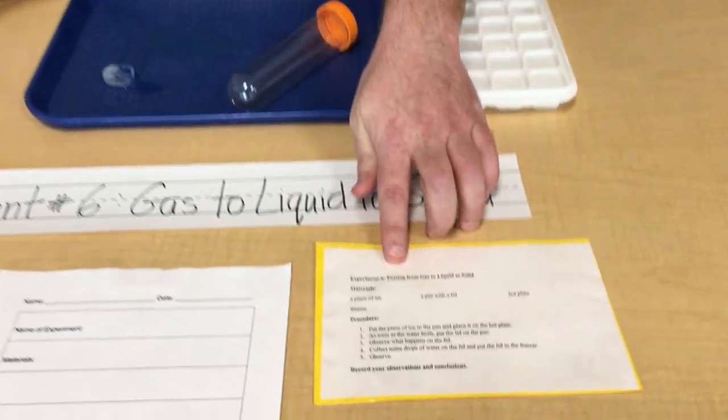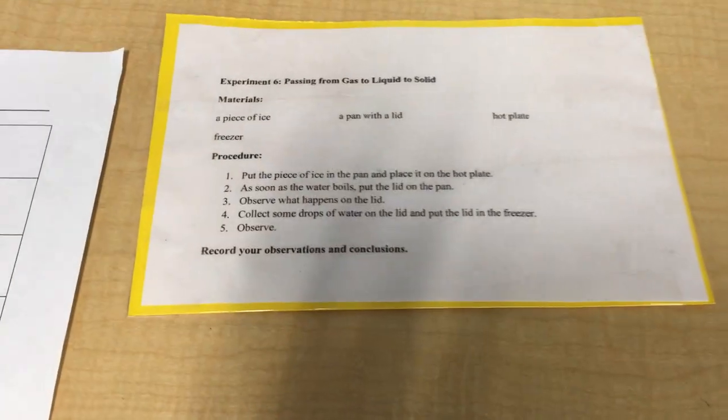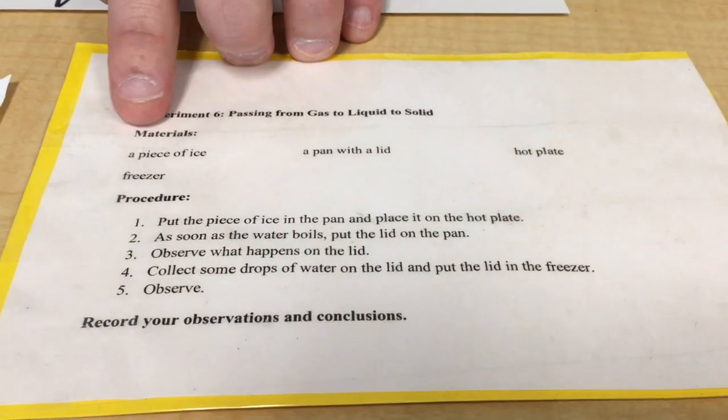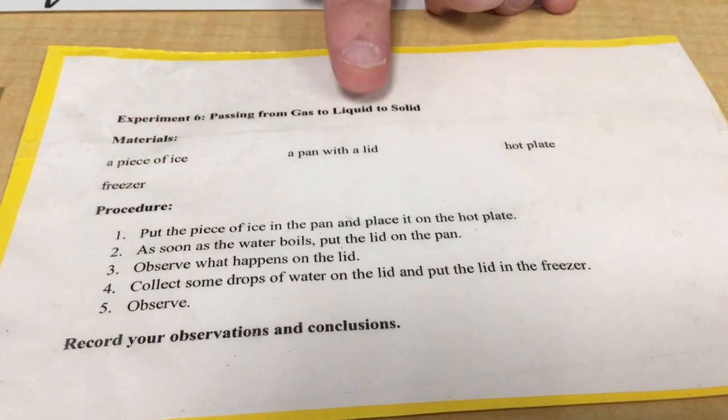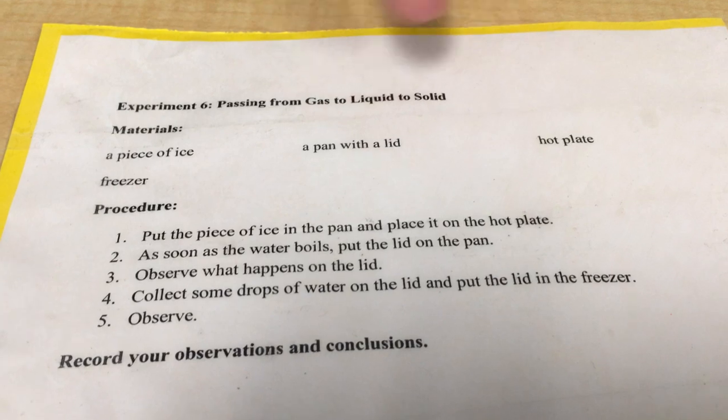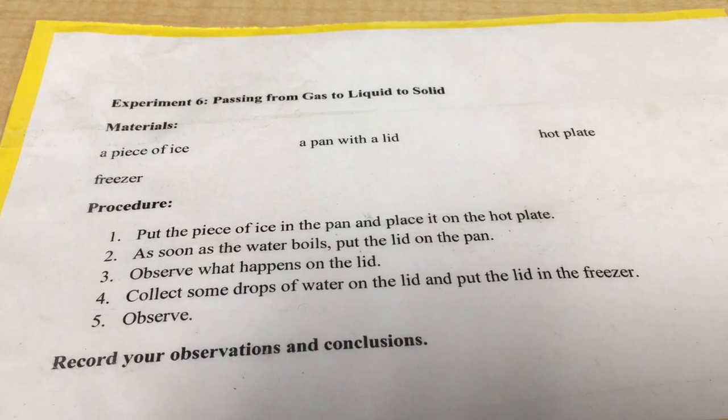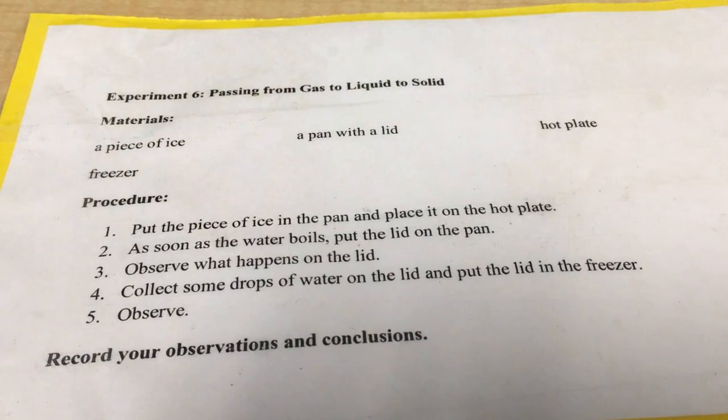So what you'll need if you want to do this at home, this is really one you have to have mom or dad help you with. Parents really should help you with this. So you need some ice, you'll need a pan with a lid on the stove. You need a hot plate, something to heat up water with, and a freezer for a part afterwards.